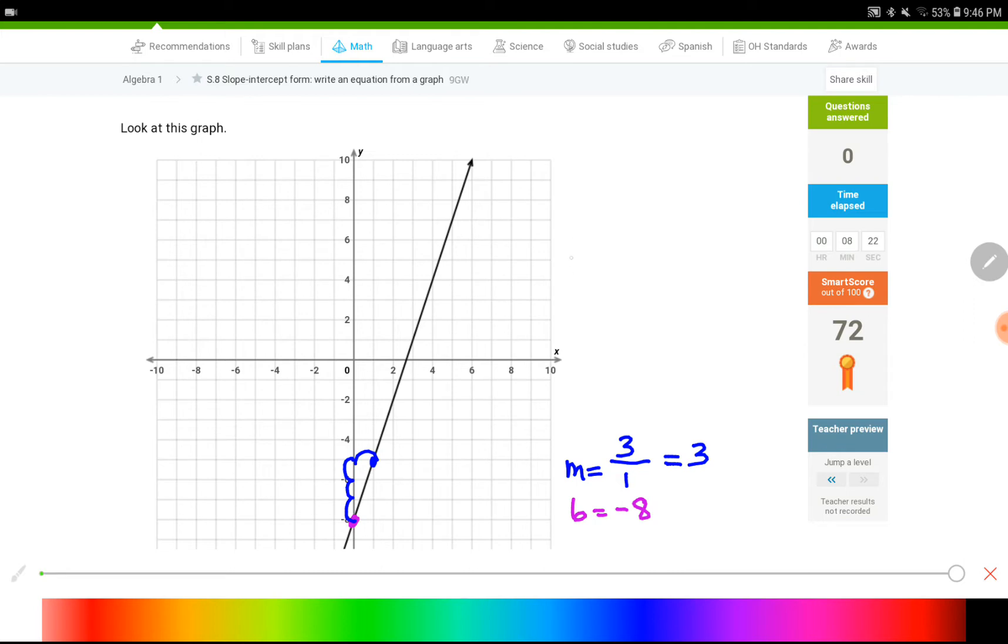So I can write my slope-intercept form, which is y equals mx plus b. So it turns into y equals, m value is three times x plus negative eight is the same as minus eight. So that would be my final answer for this question. So that's all for this video, guys.